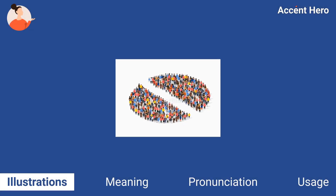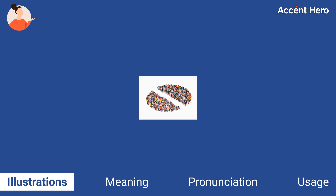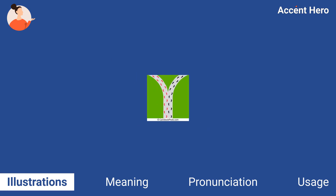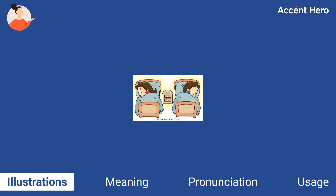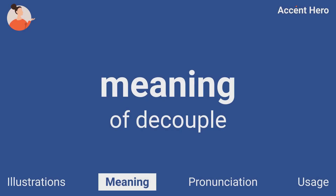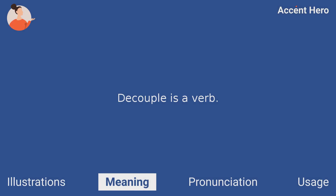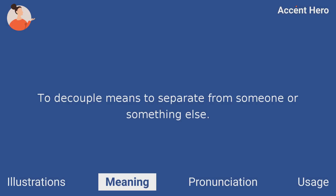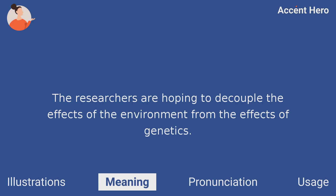Illustrations. Decouple is a verb. To decouple means to separate from someone or something else. For example, you can say: the researchers are hoping to decouple the effects of the environment from the effects of genetics.